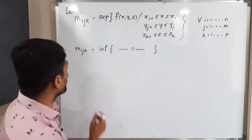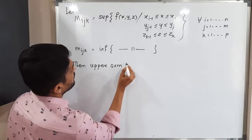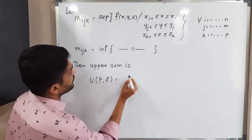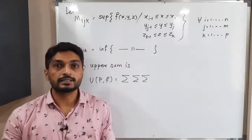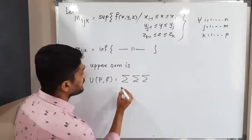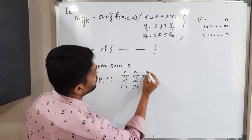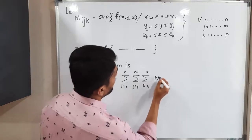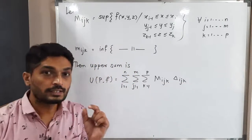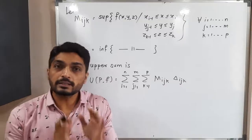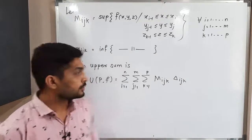Next we compute the upper sum. The upper sum U(P,f) equals the triple summation — i from 1 to n, j from 1 to m, k from 1 to p — of capital M_ijk times delta_ijk, which is the volume of each sub-cuboid. The pattern is the same as for double integration, extended to triple integration.